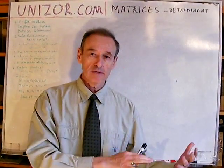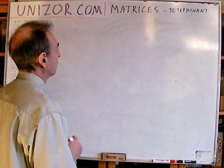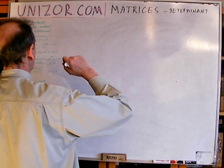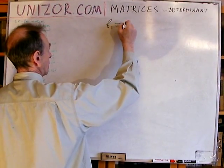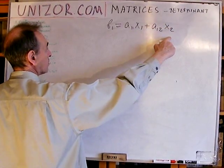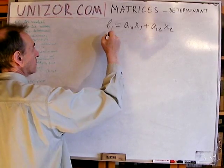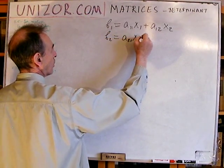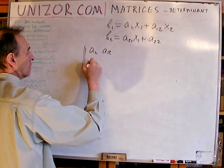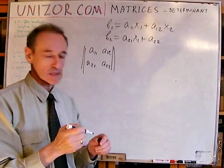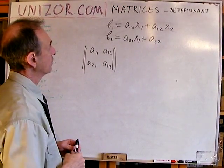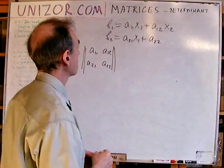Now let's go to algebra, talking about 2x2 matrices. Let's discuss a system of two equations with two unknowns, x1 and x2. All other coefficients are known. We were talking about how the matrix of coefficients determines the transformation from unknowns to the constants B. Now let's solve it as we usually solve a system of two equations with two variables.